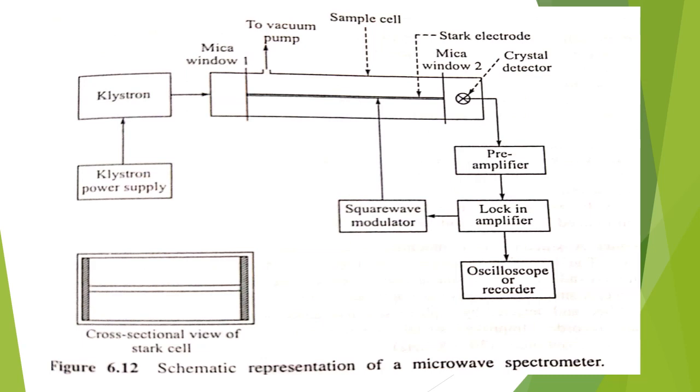The Stark electrode is given a square wave potential from 0 to 2000 volts. Thereby a potential is maintained in the sample cell. And the radiation from the klystron is modulated due to the Stark effect. And the modulated waves are received by the crystal detector and then amplified and fed into the recorder.